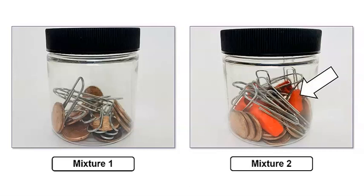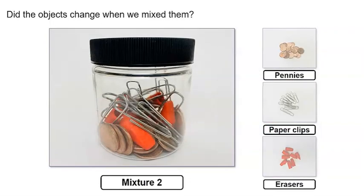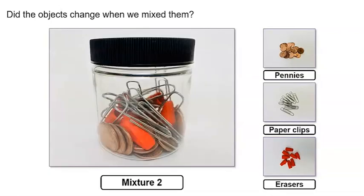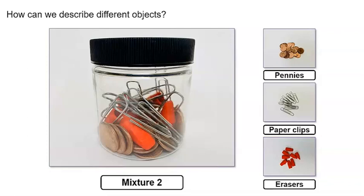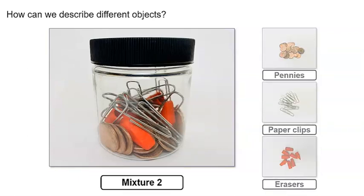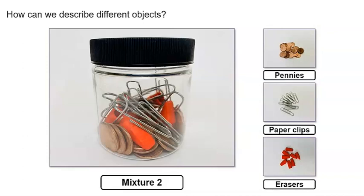One task for today will be to draw this mixture. Another task will be to answer the question about whether the objects changed when we mixed them and to explain your answer. Did the objects change when we mixed them? No! Once again, the objects did not change when we mixed them. We have been exploring the question: how can we describe different objects? How does our new knowledge about mixtures help us answer this question? We learned that mixtures are a combination of two or more objects or materials, and we also learned that when we mix objects together, the properties of the objects can stay the same.